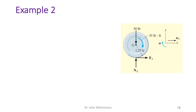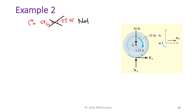Since the wheel is slipping, the relation a_G = 1.25·α is no longer valid.